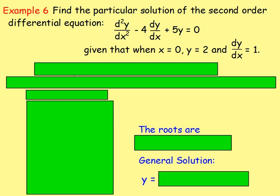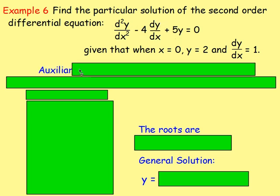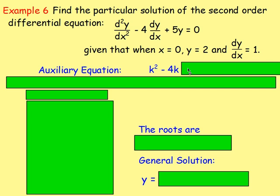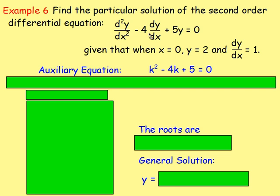Example 6: find the particular solution of the second-order differential equation d²y/dx² − 4 dy/dx + 5y = 0, given that when x is 0, y is 2, and dy/dx equals 1. First, the auxiliary equation: the coefficients of d²y/dx², dy/dx, and y are 1, negative 4, and 5. So the auxiliary equation is k² − 4k + 5 = 0.